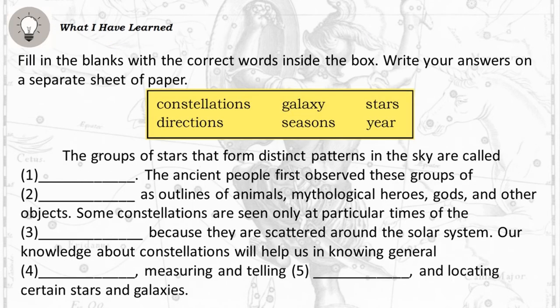Fill in the blanks with the correct words inside the box. Write your answers on a separate sheet of paper. The groups of stars that form distinct patterns in the sky are called [1]. The ancient people first observed these groups of [2] as outlines of animals, mythological heroes, gods, and other objects. Some constellations are seen only at particular times of the [3] because they are scattered around the solar system. Our knowledge about constellations will help us in knowing general [4], measuring and telling [5], and locating certain stars and galaxies.